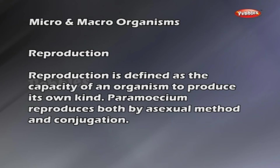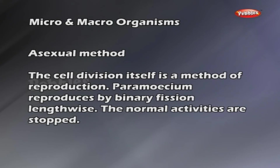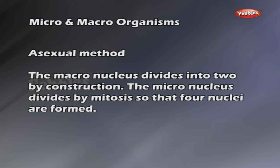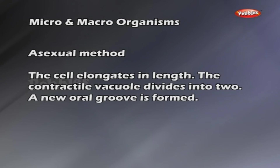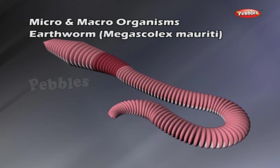Reproduction is defined as the capacity of an organism to produce its own kind. Paramecium reproduces both by asexual method and conjugation. Asexual method — binary fission: normal activities are stopped. The macronucleus divides into two by constriction. The micronucleus divides by mitosis so that four nuclei are formed. The cell elongates in length. The contractile vacuole divides into two. A new oral groove is formed. Then the pellicle bends inside to form a constriction, extending inside and dividing the cell into two cells — binary fission is completed.